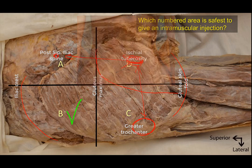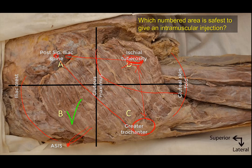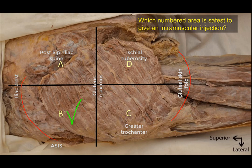Sometimes we use a line extending between the posterior superior iliac spine and the greater trochanter and give the injection above this line. Sometimes we use the anterior superior iliac spine — placing the index finger on it, spreading the other fingers, and giving the injection in the area between the index and middle fingers. In general, it is the superior lateral quadrant that is safest, but we must remember that the gluteal region is a wide area. If confined to just the prominence of the buttock, the superior lateral quadrant would be positioned where it would definitely hit the sciatic nerve.